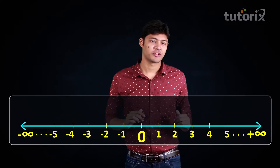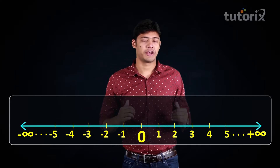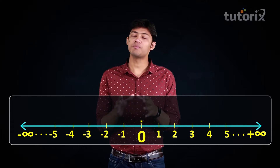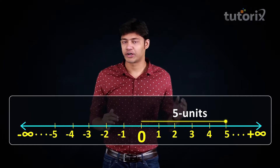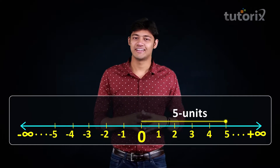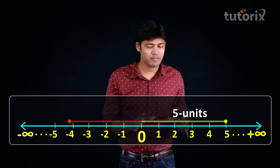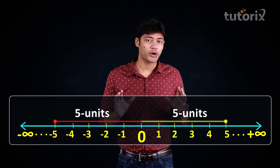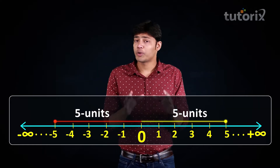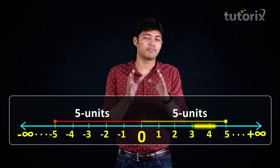To understand the modulus function, let's consider the real number line. Let's say we are at the point zero and we want to reach the point five on the number line. We simply move a distance of five units towards the right and reach the point five. Now if we want to reach the point minus five from zero, we move the same distance of five units but in the opposite direction.